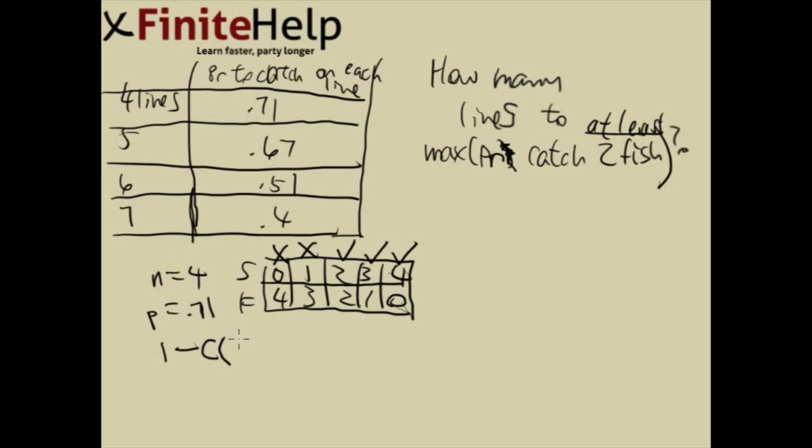Here we have a combination, 4 trials, 0 success, and then the probability of success is 0.71 to the 0, which the probability of failure is going to be 0.29 to the 4th. And then we also have to subtract 1 success, which is 4 choose 1, 0.71 to the 1, 0.29 to the 3. 1 success and 3 failures.